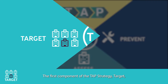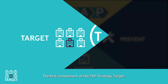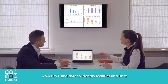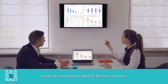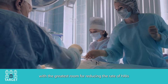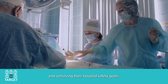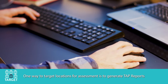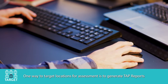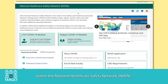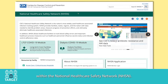The first component of the TAP strategy, TARGET, works by using data to identify facilities and units with the greatest room for reducing the rate of HAIs and achieving their hospital safety goals. One way to target locations for assessment is to generate TAP reports within the National Healthcare Safety Network, NHSN.